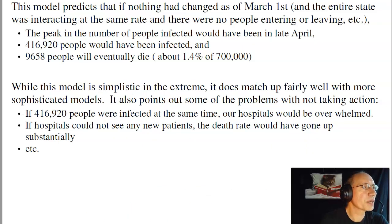So that's part of the reason we had the lockdown. And again, with this model, these are the numbers we're predicting. The peak would have been in mid-April, 400,000 people would have been infected at any given time, and about 9,600 people would die. That's 1.4% using the death rate from the World Health Organization.